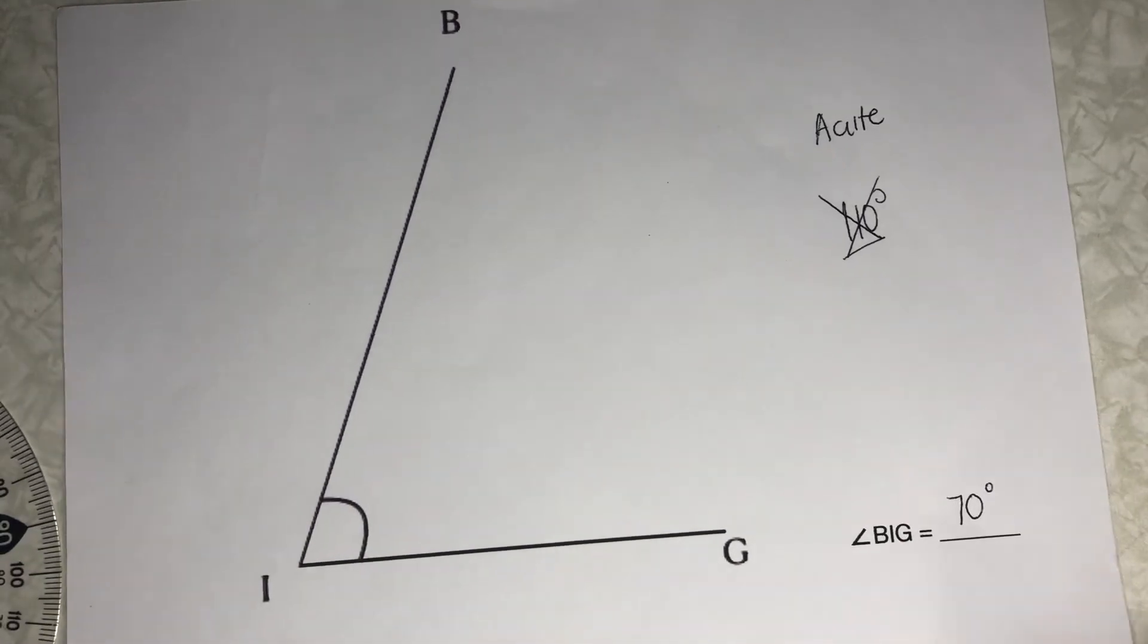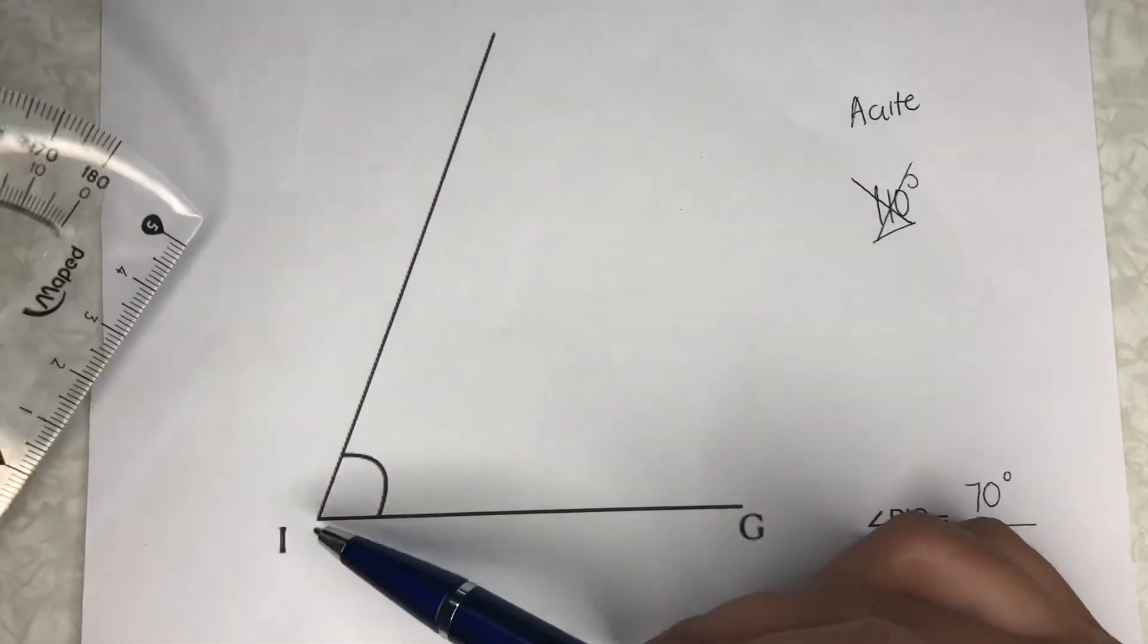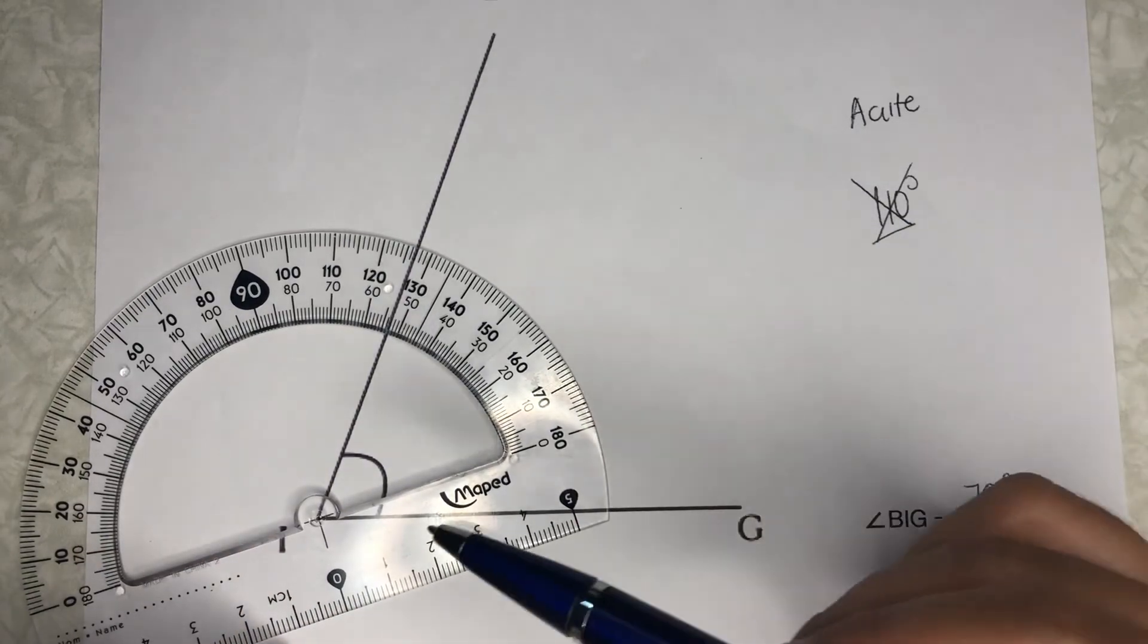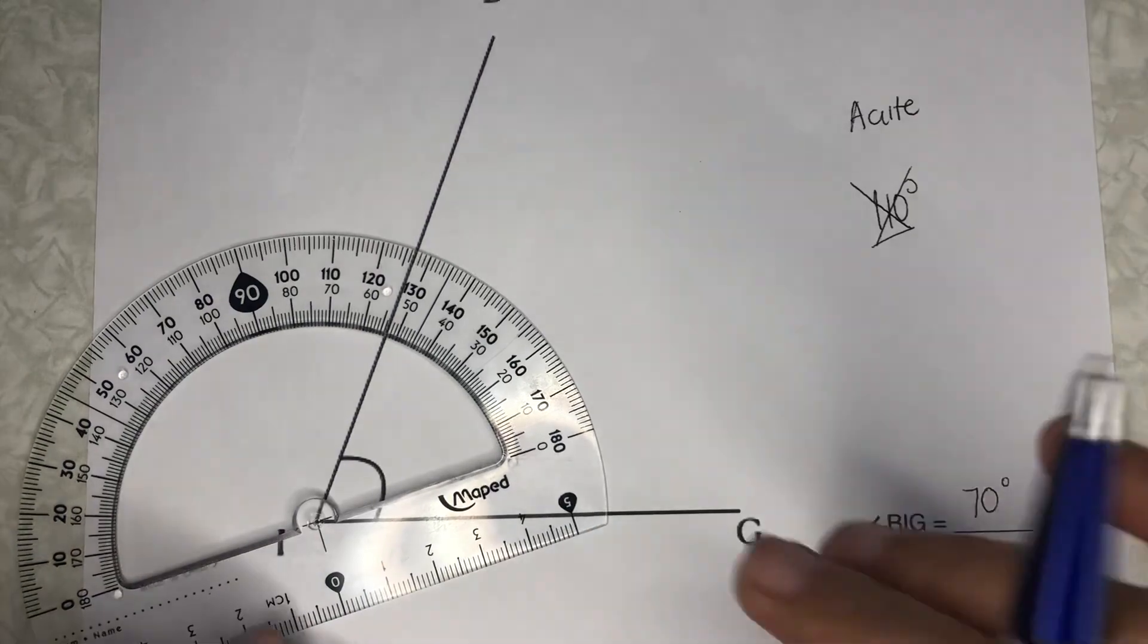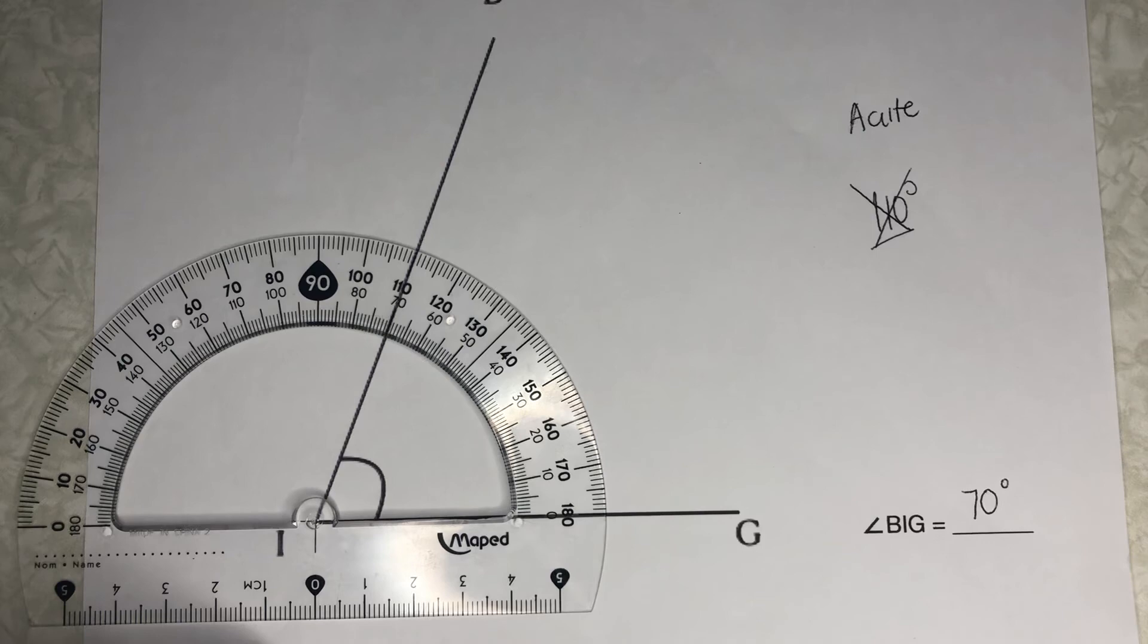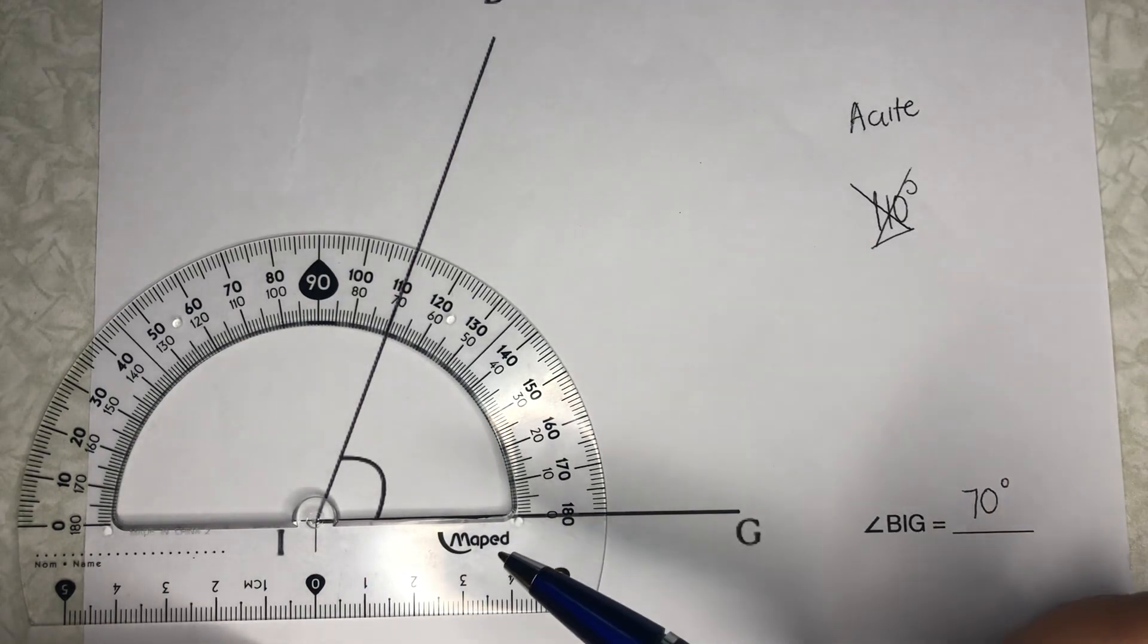See if it's acute, right, or obtuse, and then follow these simple steps: align the center mark of your protractor with the vertex, then align the baseline of the protractor with any leg, and then start measuring by using the correct scale. You just have to find where the zero is and then use that scale.